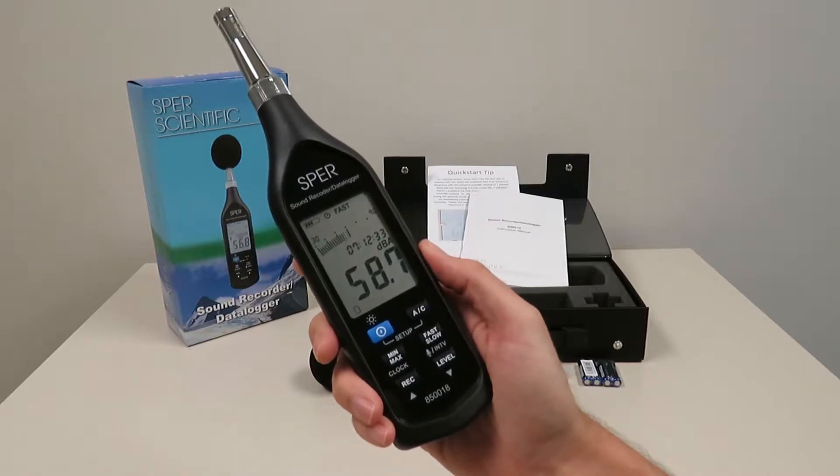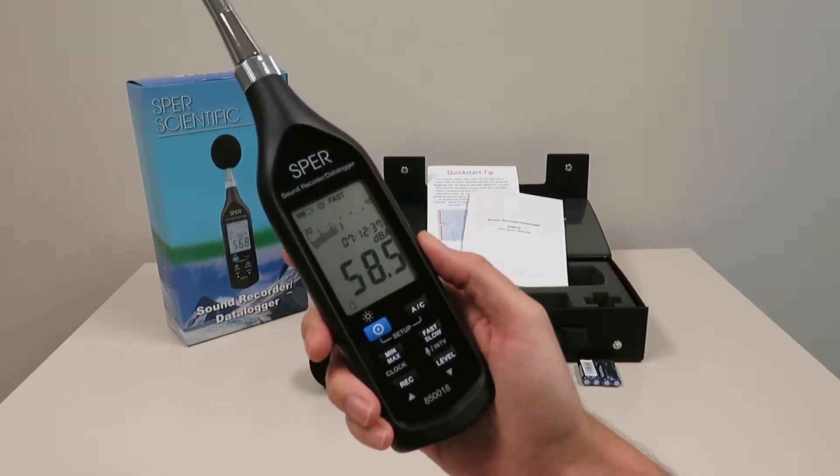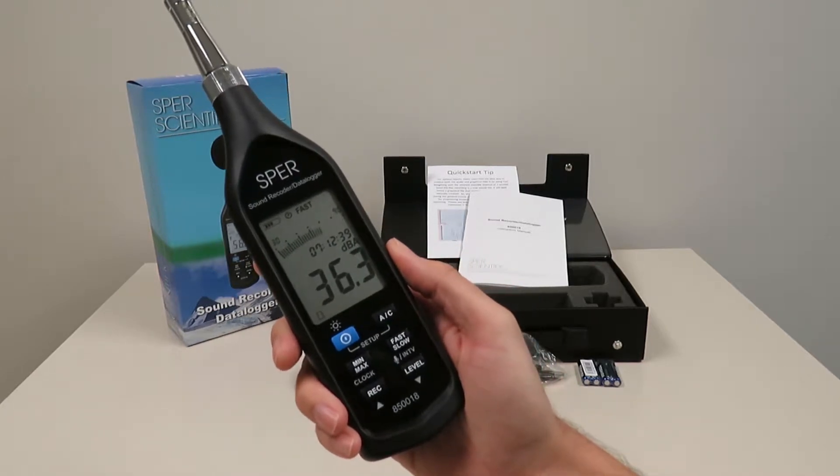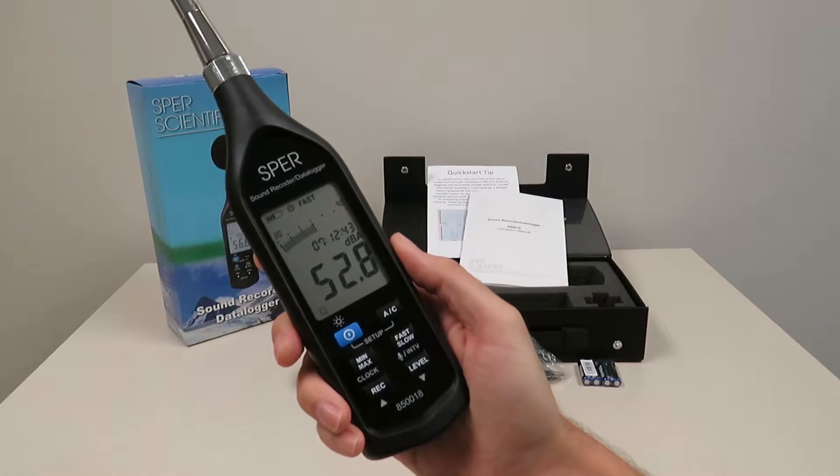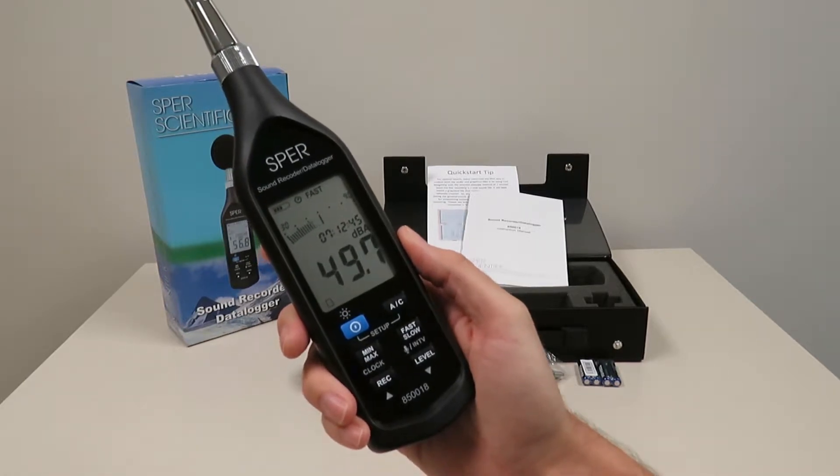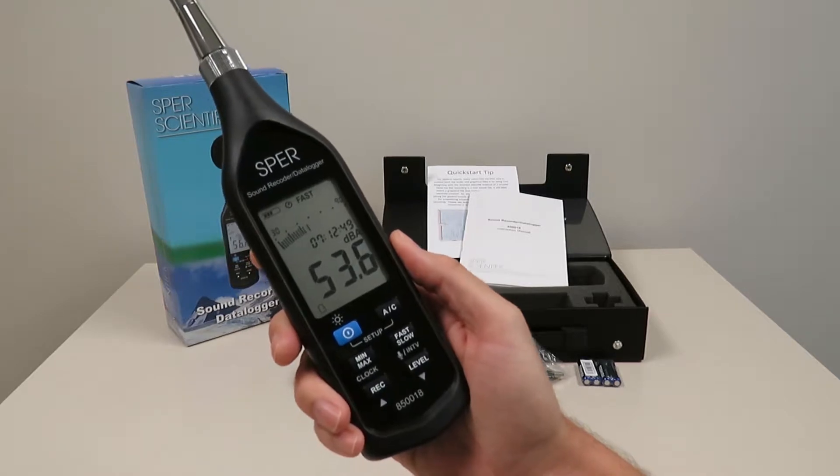This unique sound meter enables you to play back a live audio recording that is synced with the measured sound intensity graph. The meter and included software can quickly collect and analyze all standard sound data such as decibel levels, LEQ, and SPL, but also allows you to pinpoint the cause of various sound levels using the live recording.